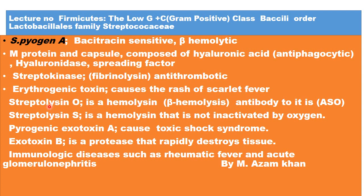Another important factor is Streptolysin O — an enzyme that performs beta hemolysis. The antibody produced against Streptolysin O is called ASO (antistreptolysin O) and is used as a diagnostic tool. Streptolysin S is a hemolysin not inactivated by oxygen, so it is oxygen stable. Pyrogenic exotoxin also causes toxic shock syndrome. Exotoxin B is a protease that rapidly destroys tissue. S. pyogenes also causes immunological diseases such as rheumatic fever and acute glomerulonephritis.